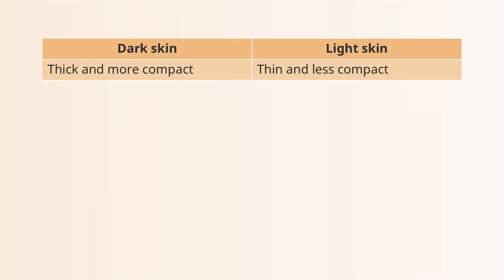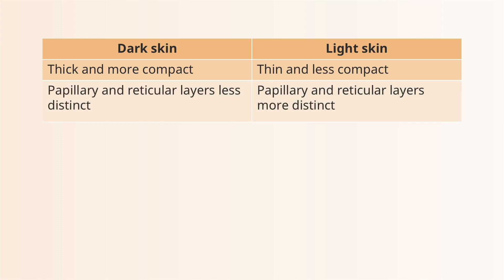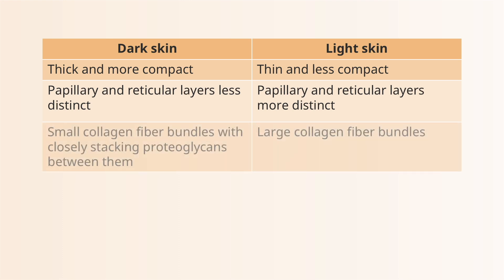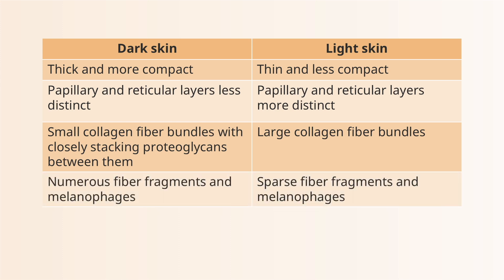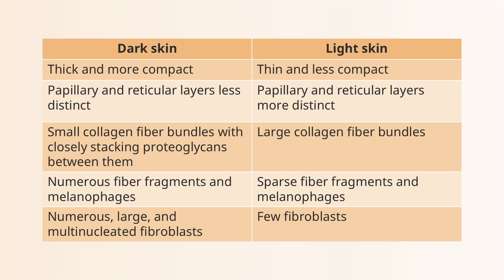Moving on to the third difference, which focuses on the dermis: dark skin has a thicker and more compact dermis compared to lighter skin, where it is thinner and less compact. The papillary and reticular layers are less distinct in dark skin, whereas in light skin they are more distinct. In dark skin, there are numerous large and multi-nucleated fibroblasts, whereas in light skin there are very few fibroblasts.